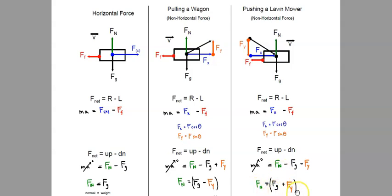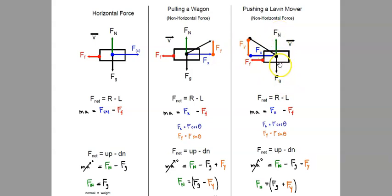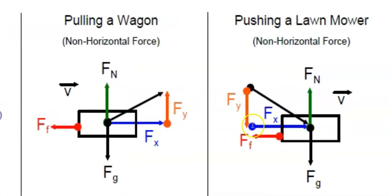When pushing a lawnmower, where the Y component points down (quadrant 4 vector), the vertical F_net equation gives: zero equals F_normal up, minus weight down, minus FY down. Solving for F_normal, we get: F_normal equals weight plus the Y component. So pulling a wagon gives a positive FY — a lift — making the object slightly lighter and reducing the normal force. Pushing a lawnmower gives a downward press, adding to the weight and increasing the normal force.